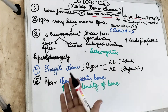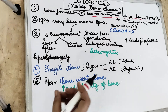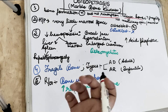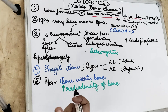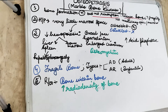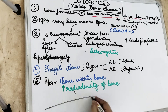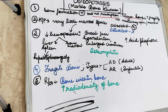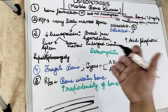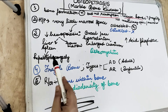Bone formation takes place normally but there is no resorption, so the bone becomes hypermineralized — it is solid bone with a tendency to fracture. Because the bone is very dense and keeps forming continuously, there are no medullary spaces. As we know, all hematopoietic activity — the formation of blood cells — takes place in the bone marrow, so there is decreased hematopoiesis.